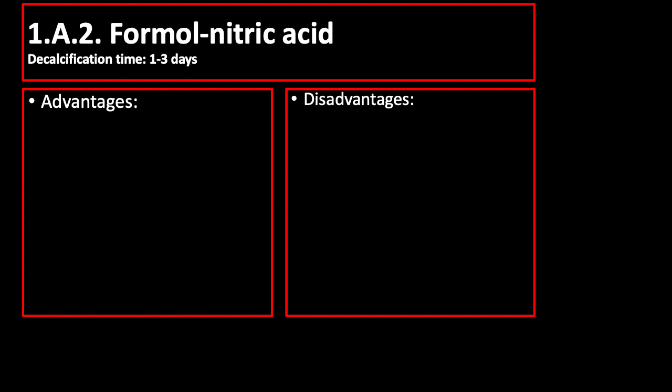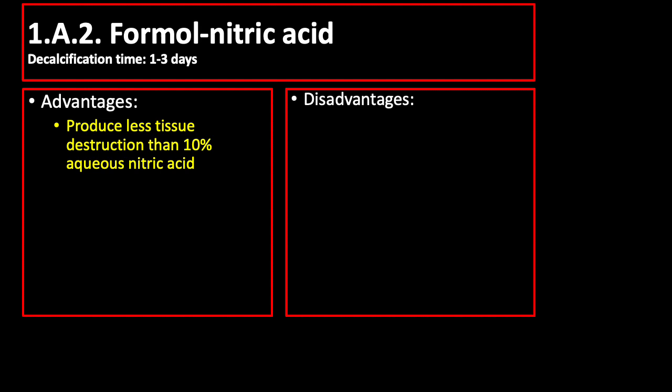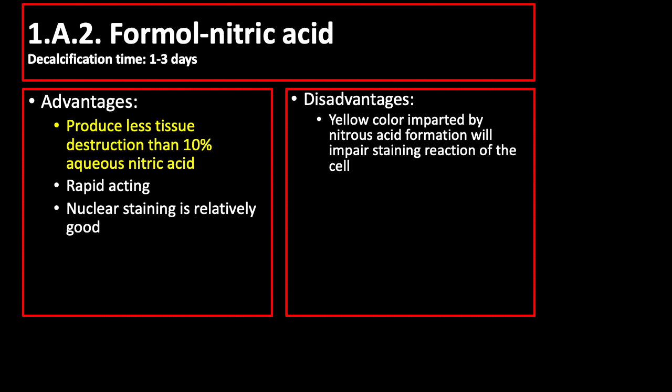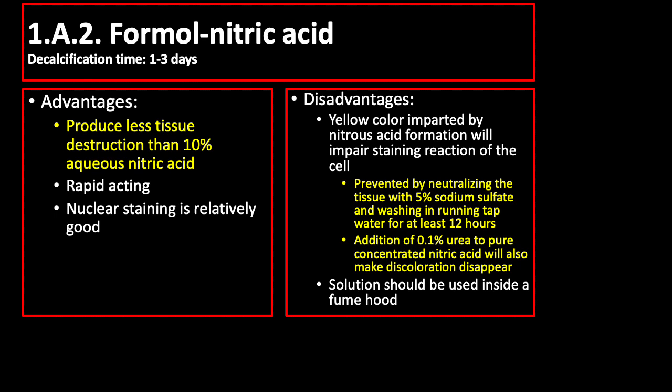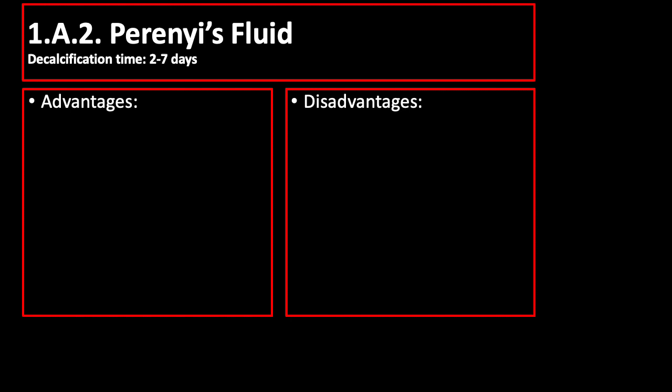Formal nitric acid has a decalcification time of 1 to 3 days. It produces less tissue destruction than 10% Accus nitric acid. Disadvantages include yellow color imparted by nitrous acid formation which impairs staining reaction of the cell, prevented by neutralizing the tissue with 5% sodium sulfate and washing in running tap water for at least 12 hours. Addition of 0.1% urea to pure concentrated nitric acid will also make discoloration disappear. The solution should be used inside a fume hood.